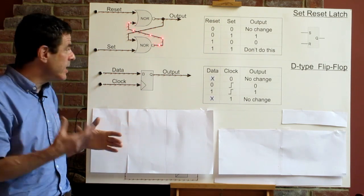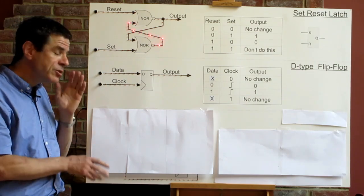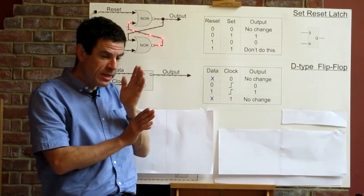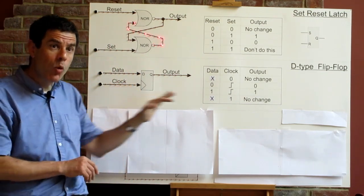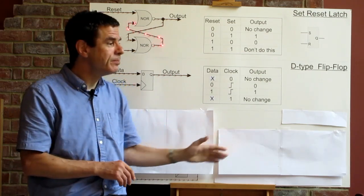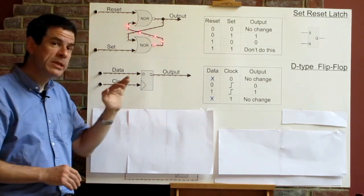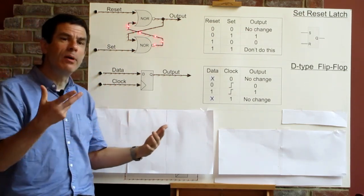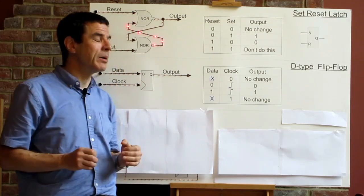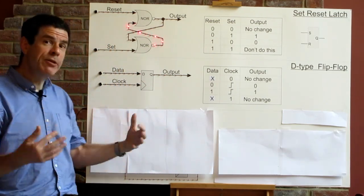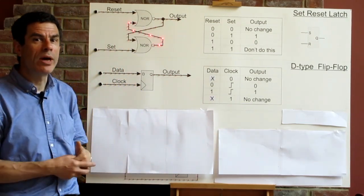Now the reason why we're so keen on edge-triggered flip-flops is that that transition marks an instant of time. If we give that same signal to all of the flip-flops in the system, they will all recognize that same instant of time when the clock does that transition. And all of the flip-flops will update to the new value at the same instant of time. And it's that synchronous behavior, everything happening together, which allows us to build processors the way we do.